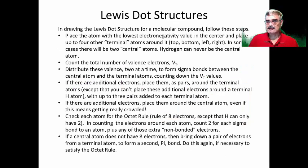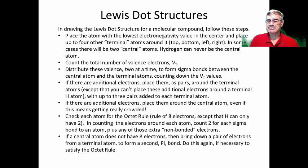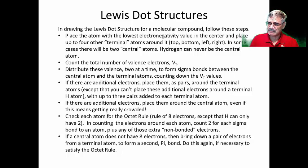This is an important slide — it tells you the rules for drawing Lewis dot structures. Rule one: place the atom with the lowest electronegativity value in the center, and place the other atoms — called terminal atoms — in the four positions (top, bottom, left, right) around the central atom. In some cases, we will have to draw two central atoms, which we'll see in a moment.